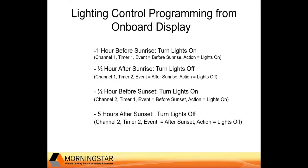In this slide, we're taking a look at the channels and the timers for the particular events we want to have happen. For turning the lights on in the morning, we're going to use channel one, timer one — the event is before sunrise and the action is turn the lights on. For turning the lights off in the morning, channel one, timer two — the event is after sunrise and the action is lights off. For turning the lights back on in the evening, channel two, timer one — the event is before sunset and the action is lights on. For turning the lights off in the evening, channel two, timer two — the event is after sunset and the action is lights off. When done programming these, we're going to want to combine these timers all as OR functions so they operate independently of one another.